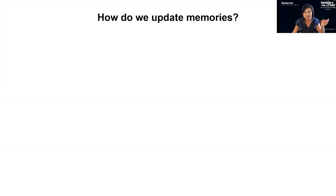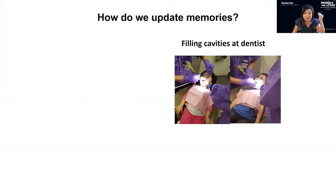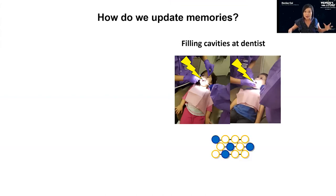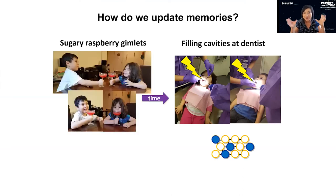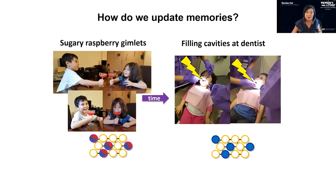For example, I took my kids to the dentist and they had cavities, so they had to get them filled — a pretty aversive experience. Based on the literature we know these memories are encoded in sparse neural ensembles distributed across the brain. It would really behoove my children to think back to when their dad made them sugary raspberry gimlets — mocktails, don't worry — and link these two experiences across time to make predictions about the future, like maybe fewer sugary drinks or at least brush their teeth after.